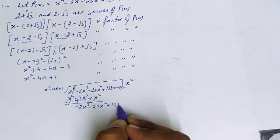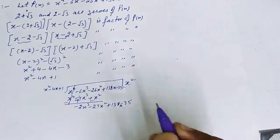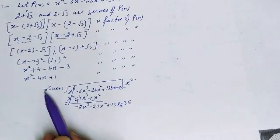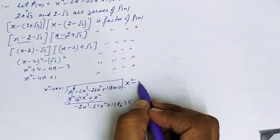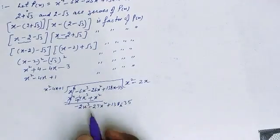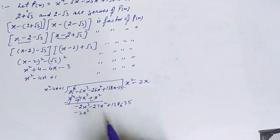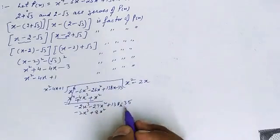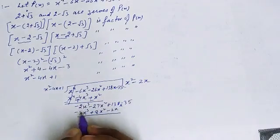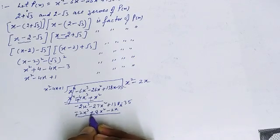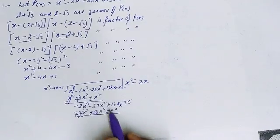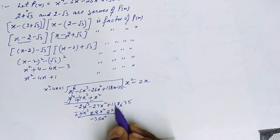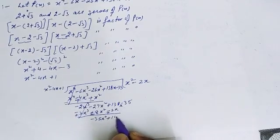Bring down the remaining terms. Now, to get -2x³, multiply x² by -2x. So -2x × x² = -2x³, -2x × (-4x) = +8x², and -2x × 1 = -2x. After changing signs and subtracting: -2x³ cancels, -27x² - 8x² = -35x², 138x + 2x = 140x. Bring down -35.